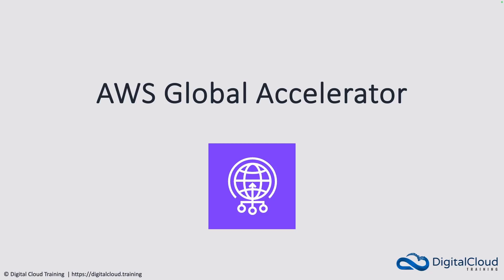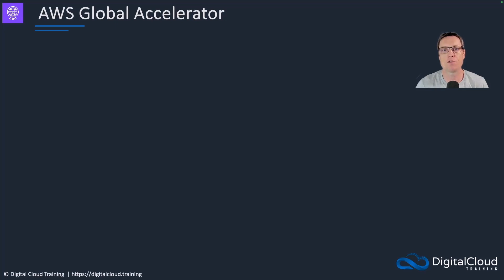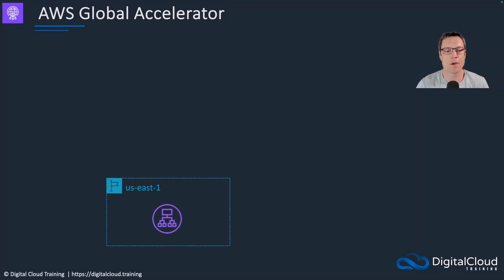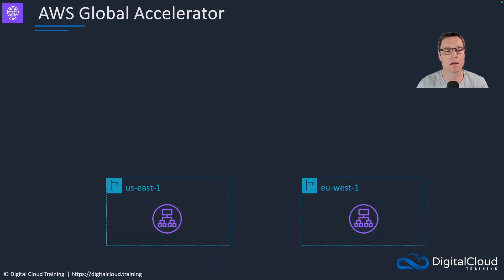In this lesson, I'm going to cover AWS Global Accelerator. Let's start off with a diagram to help you understand what this service actually is. Here we have load-balanced solutions — some kind of application sitting behind a load balancer in US-East-1 and EU-West-1, so two different continents.